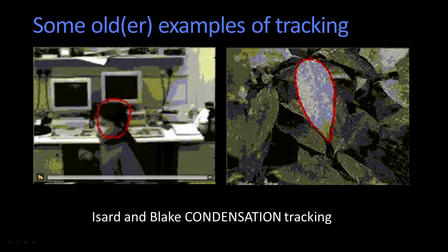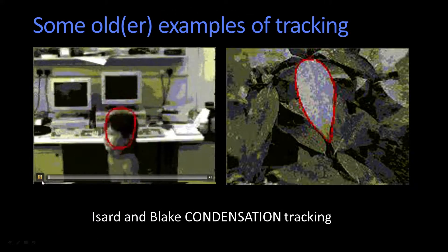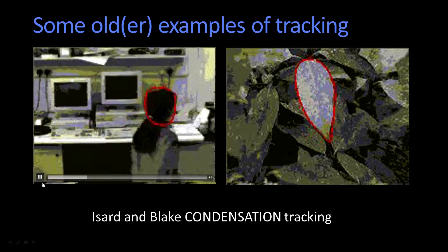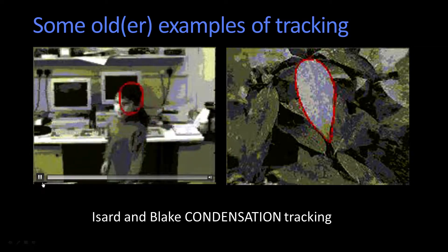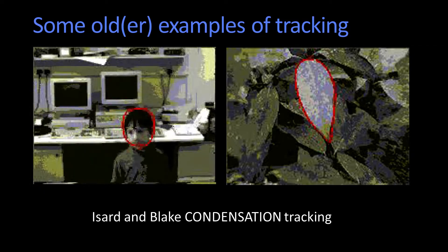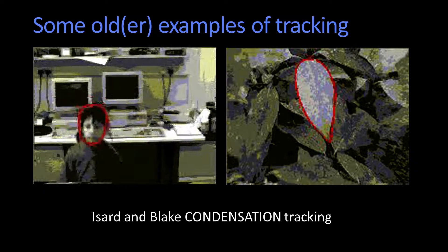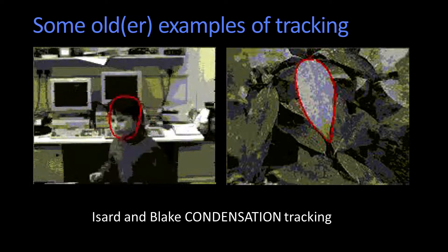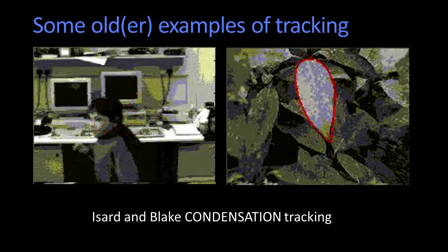Let me show you some examples of what we mean by tracking. Here are some slightly older ones. The one on the left here, this girl jumping around — you see a little red ring around her head. That's Andrew Blake's daughter a long time ago. I think she's now a lawyer, so that tells you something about the time difference.